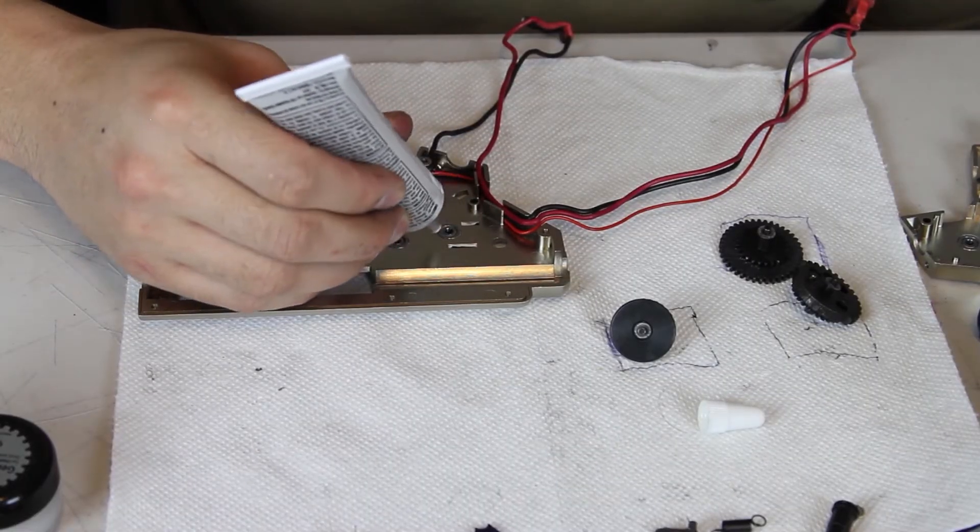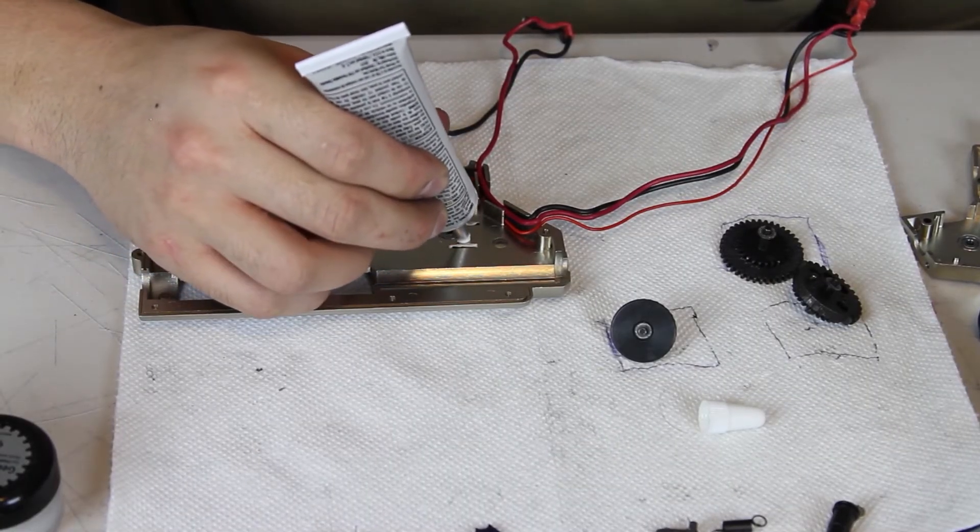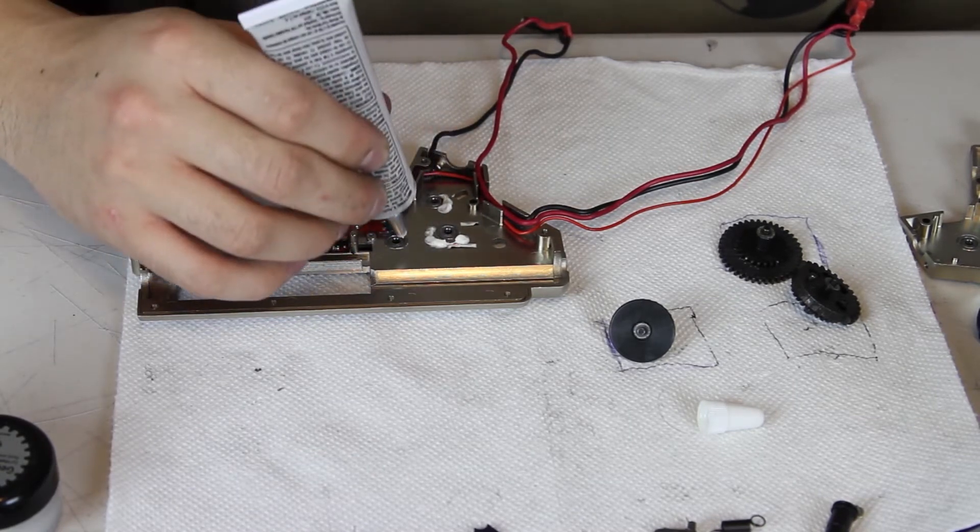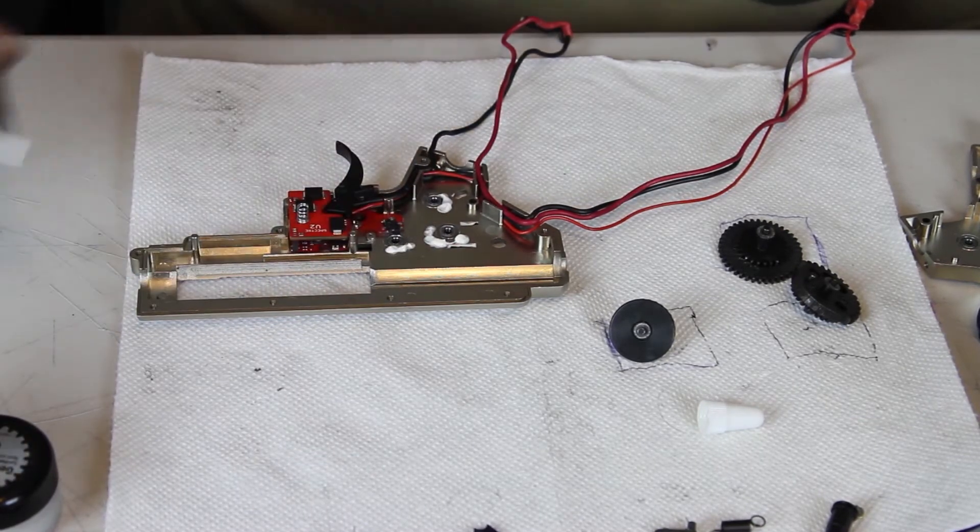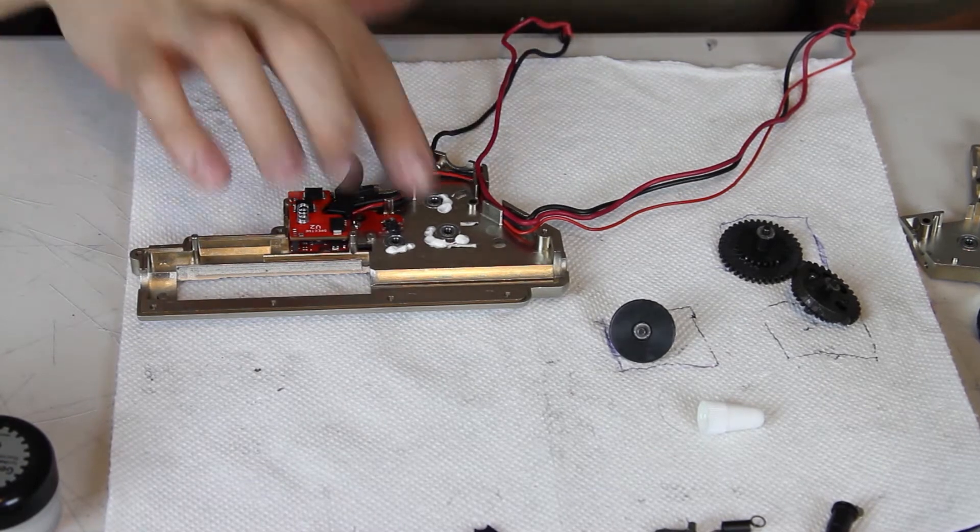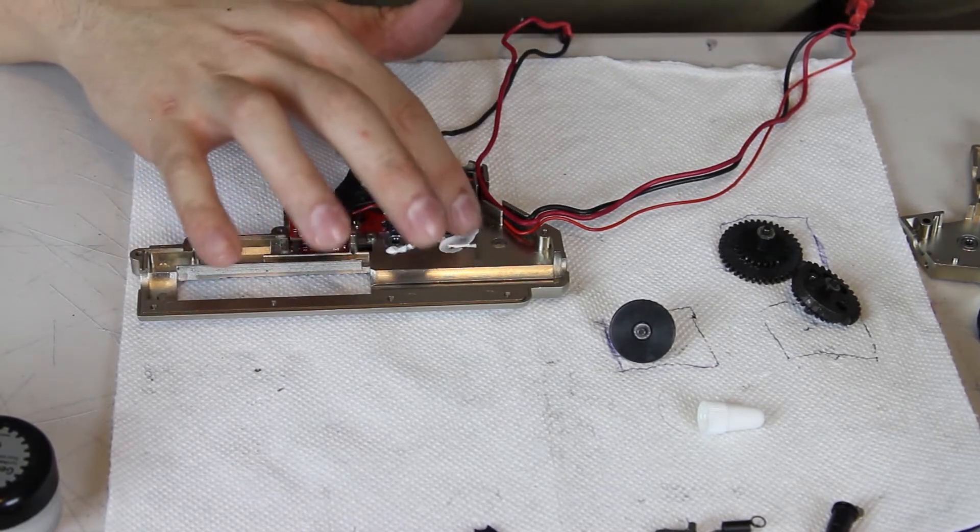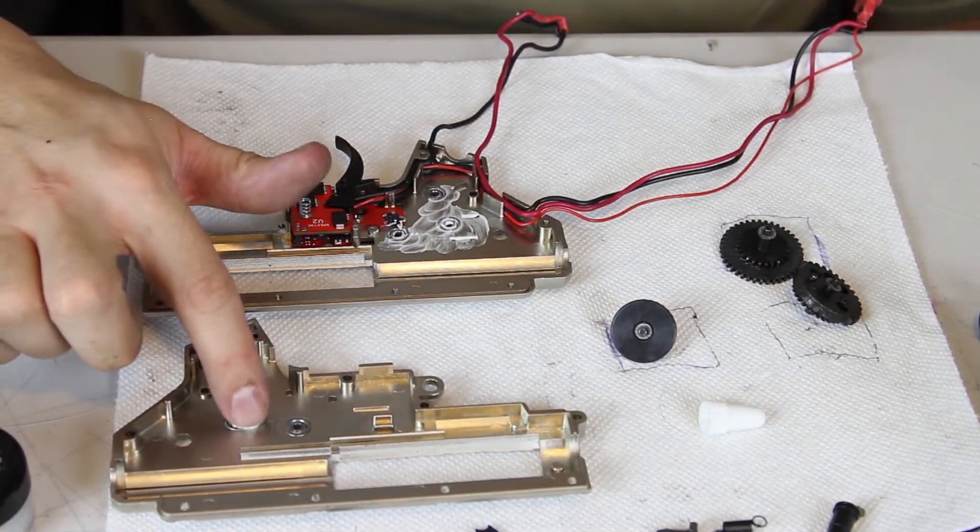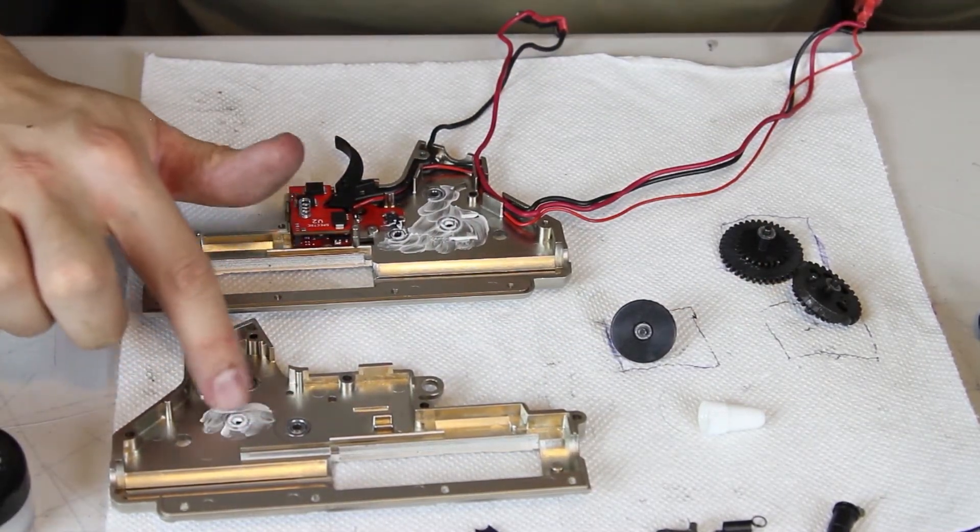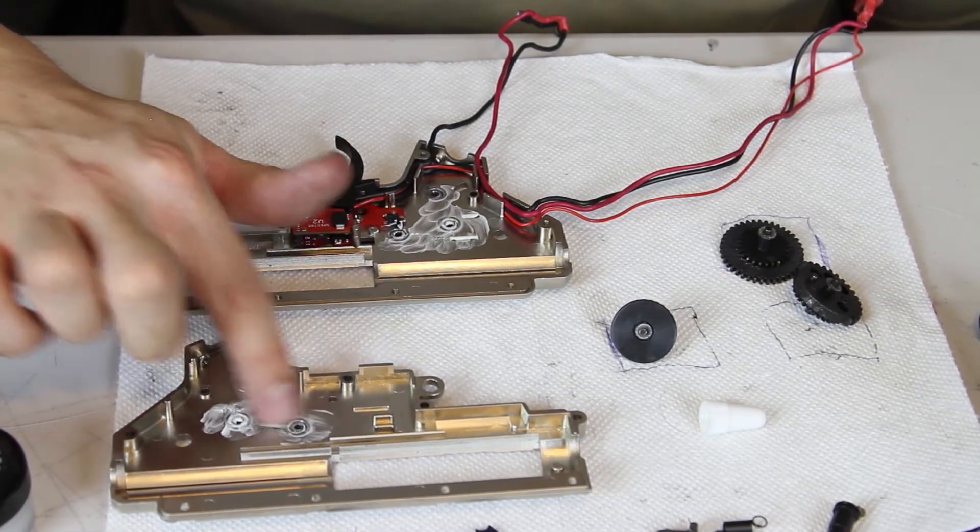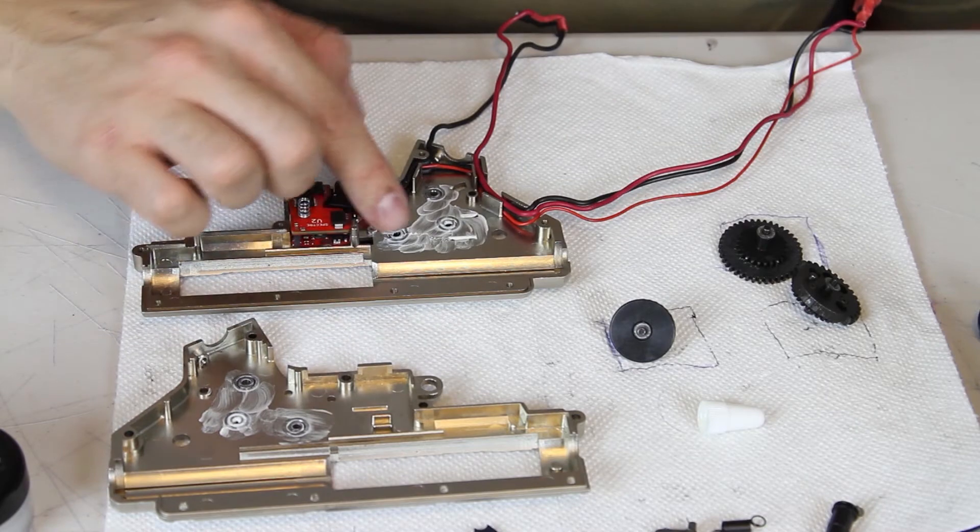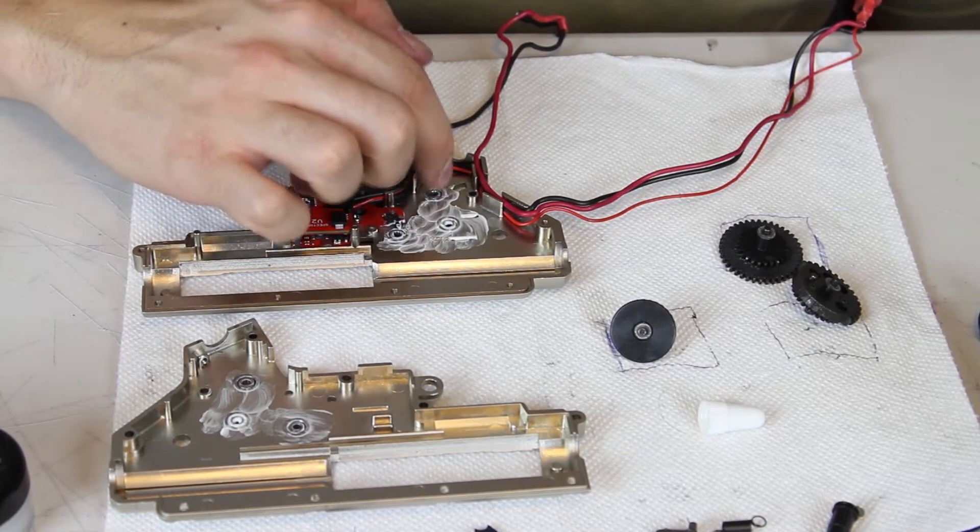The next step is to start lubricating the inside of the gearbox. Jason uses white lithium grease and applies a small amount around each gear bushing. The trick here is not to apply too much. Too much grease can build up in your gearbox and eventually cause extra resistance. You can then use your finger to smear the grease around. Make sure to grease both sides of the gearbox shell, again making sure not to use too much. You only need to apply grease around where the gears are going to sit.